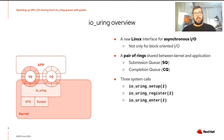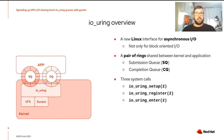IOUring is a new Linux interface between userspace and kernel to do asynchronous I/O. It's not only oriented to block operations, but has evolved as a generic interface to do asynchronous system calls. The interface consists of a pair of rings allocated by the kernel and shared with userspace. One ring is used by the application to submit new requests — called the Submission Queue — and the other, called the Completion Queue, is used by the kernel to return the result of submitted requests.